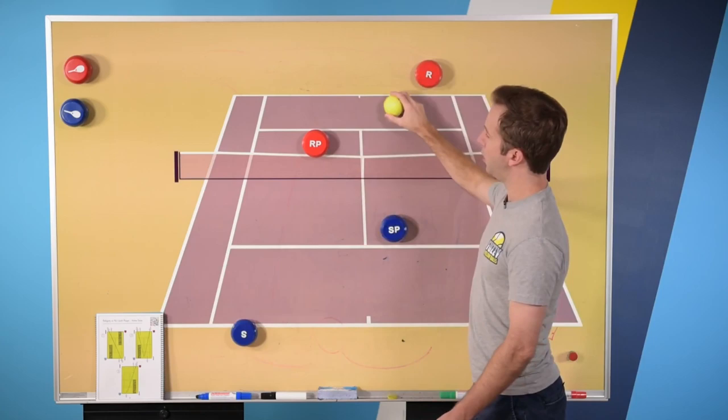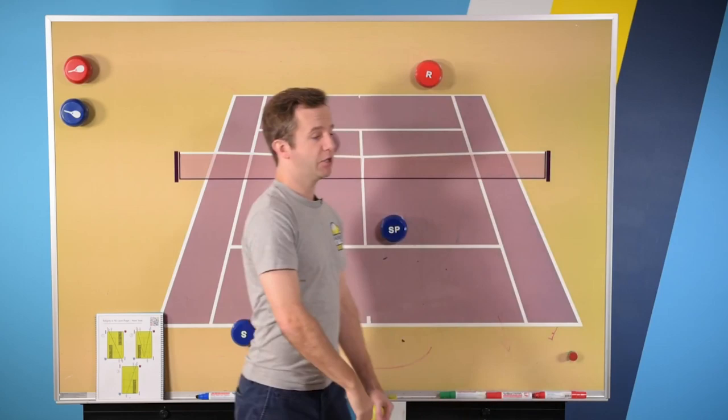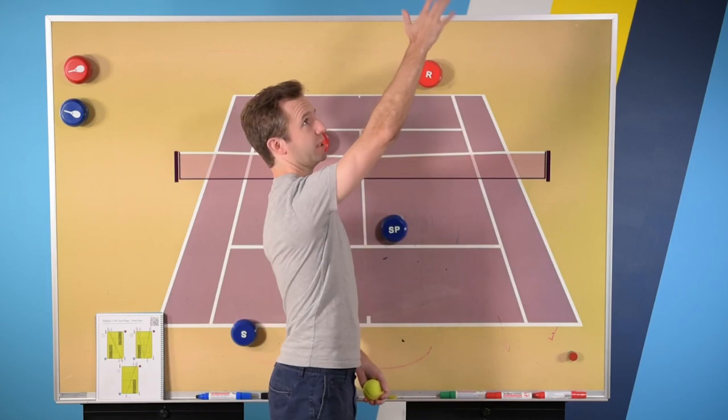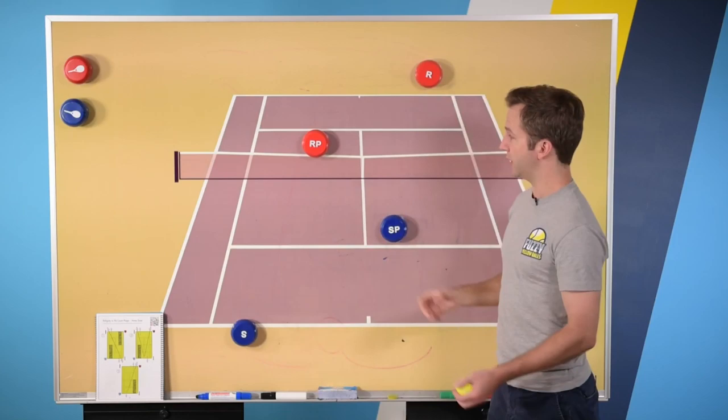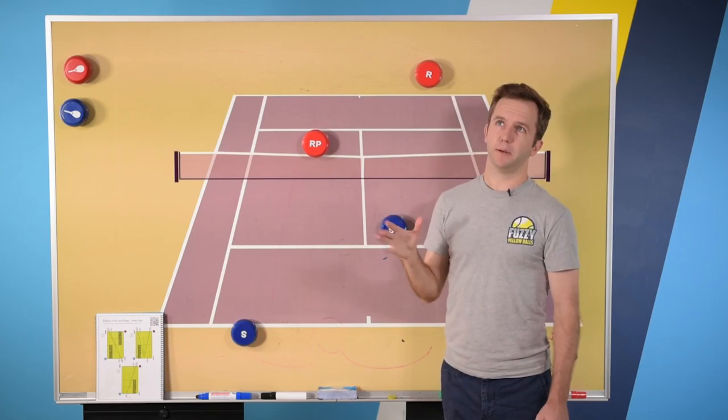So what you're trying to do is get it up over their backhand shoulder. So for a right-hander, this is going to be a backhand volley. So if it's high but it's still here, they can hit a good volley. But if they're now reaching like this, where it's almost a backhand overhead, then they're not going to be able to do anything with it. They're going to hit a weak shot, then your partner's going to come in and clean up.